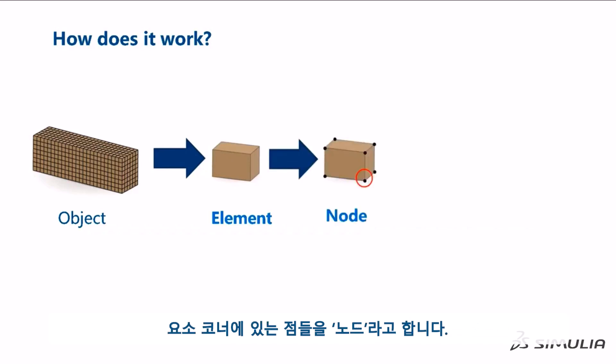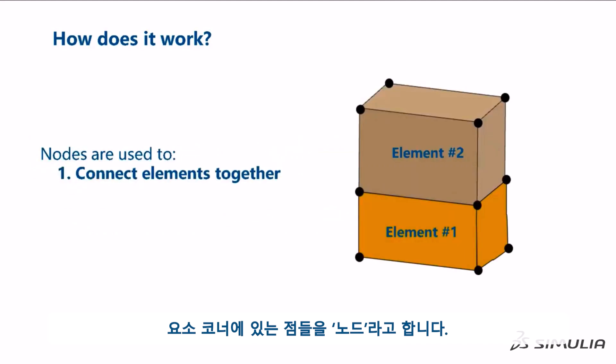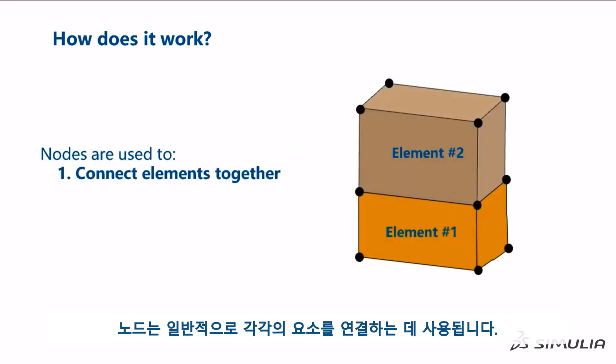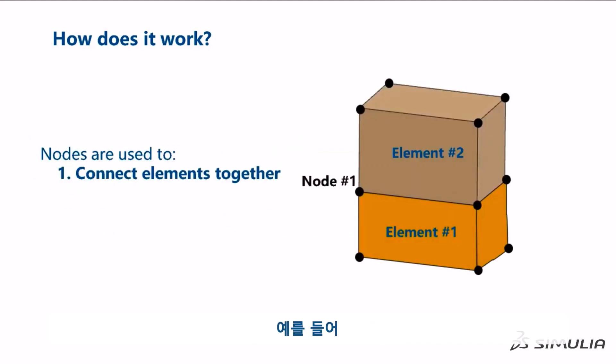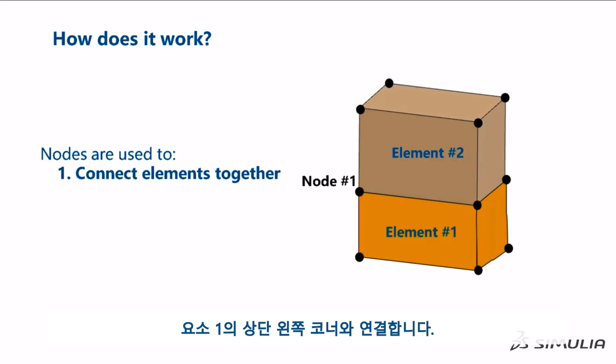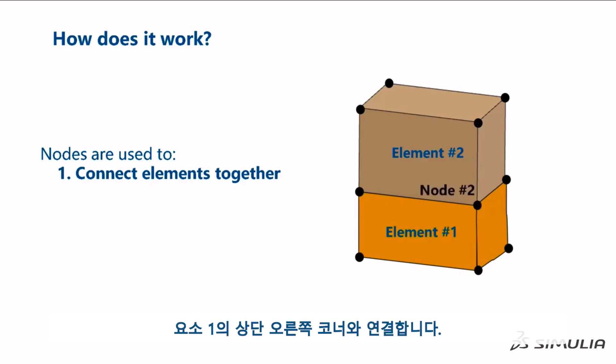Each of these small volumes is called an element. We call the points located at the corners of the element's nodes. Nodes are used to connect elements together. For example, node number 1 connects the bottom left corner of element 2 with the top left corner of element number 1. And node number 2 connects the bottom right corner of element 2 with the top right corner of element number 1.